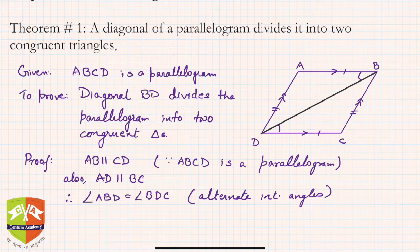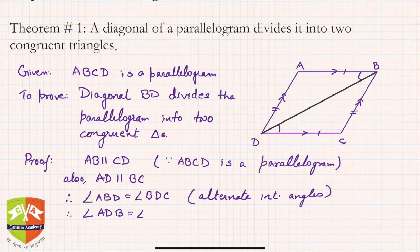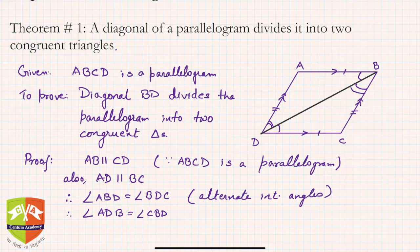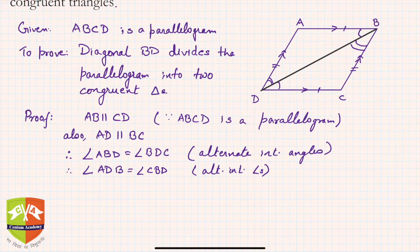We have to prove that triangle ADB is congruent to triangle CBD. So first let's meet all the requirements. Angle ADB is equal to angle CBD — again by alternate interior angles. Let me mark it as well: angle ADB equals angle CBD. The diagonal is dividing the quadrilateral into two congruent triangles, so let's see.